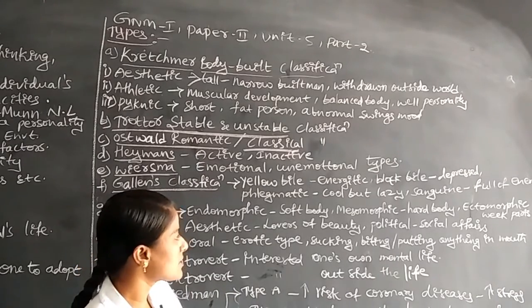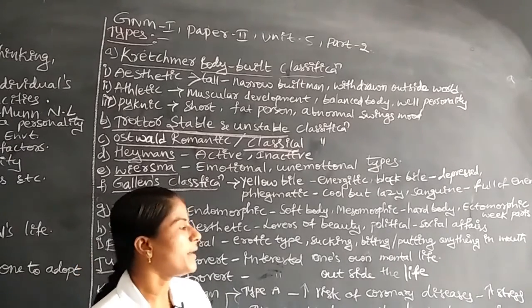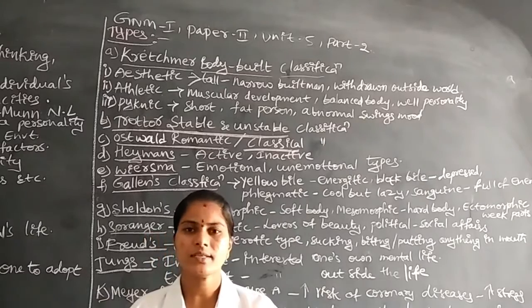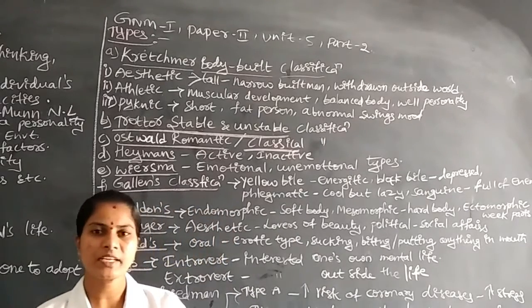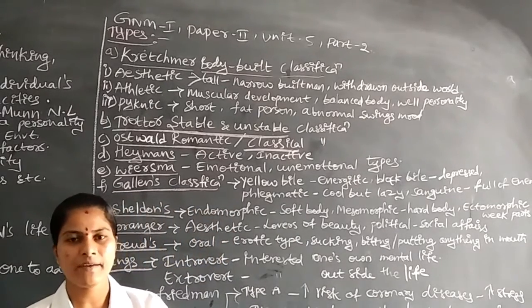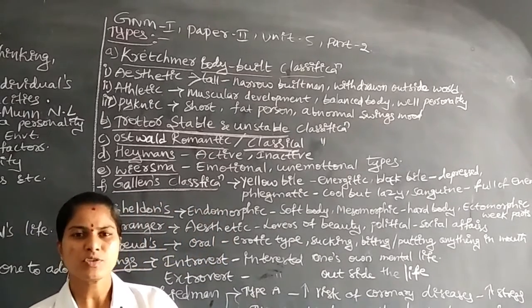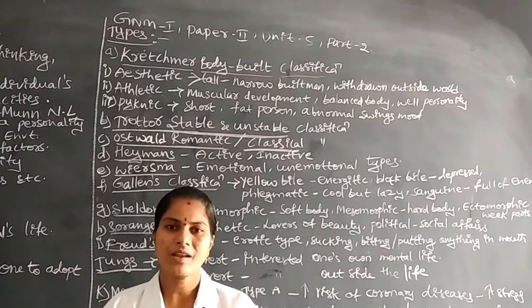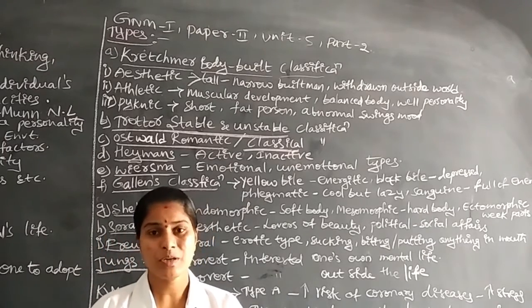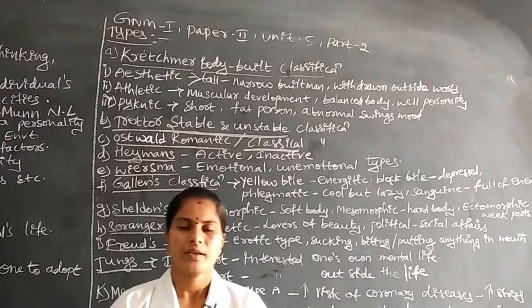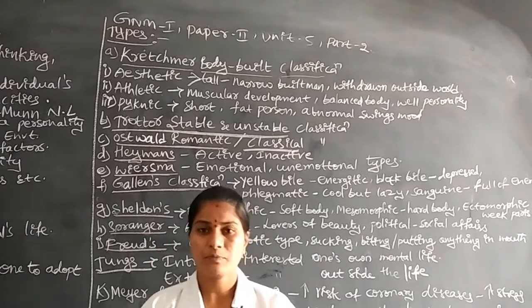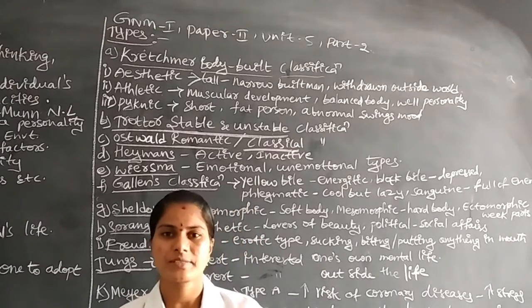Another type in Spranger's classification is the political personality. These individuals have social affairs and are always actively participating in political activities — like politicians.